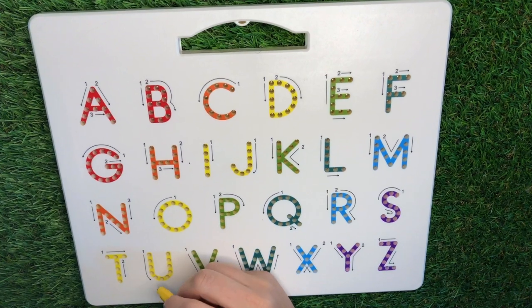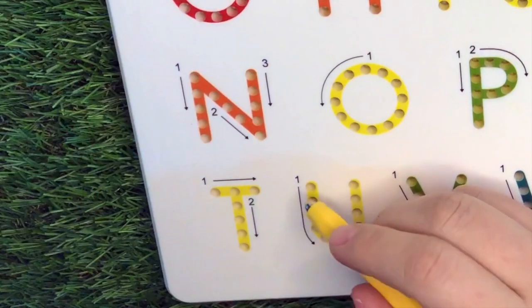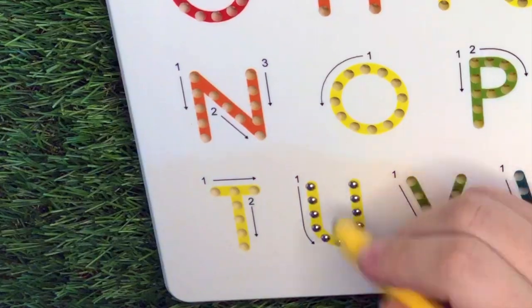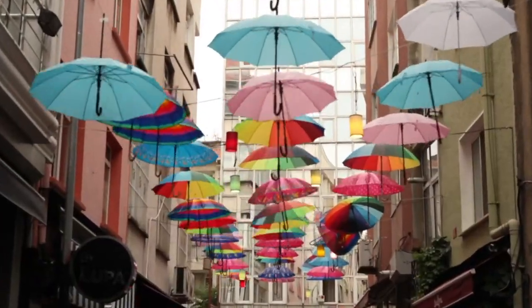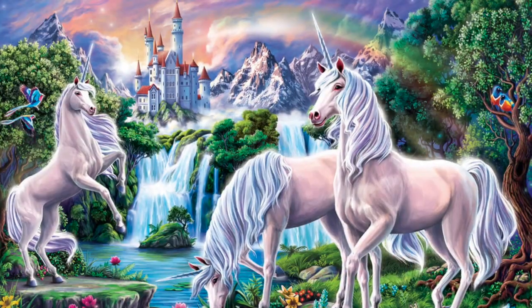Let's jump to the next one. Letter U. Pull down, around, and up. U is for umbrella, uniform, and unicorn.